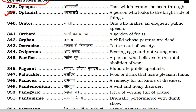Orator is also a commonly known word. Then you have orchard. Orchard is the garden of fruit trees. Then you have orphan. Orphan is one who doesn't have a mom and papa — a child whose parents are dead.